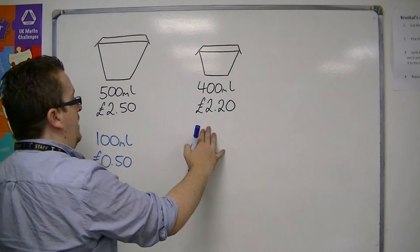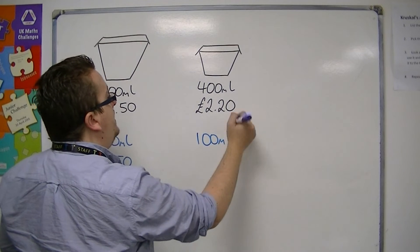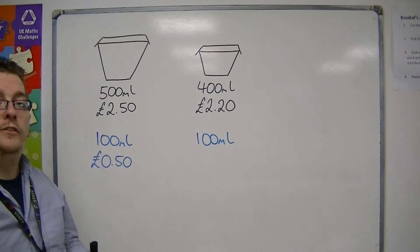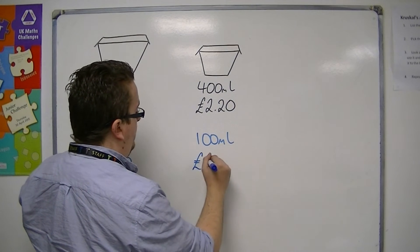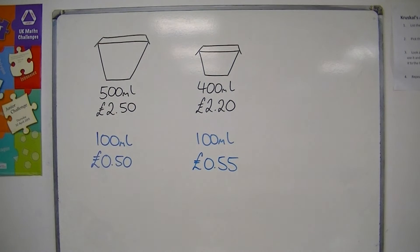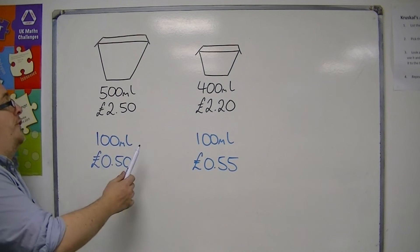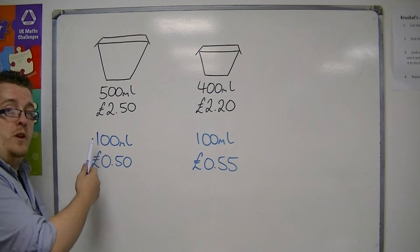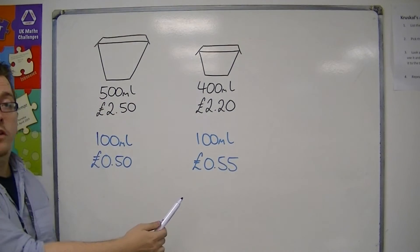For the smaller cup, to get to 100ml I need to divide through by 4. So £2.20 divided by 4 is actually 55p. You can see that 100ml for the larger cup is cheaper — I'm paying 50p for every 100ml — but for the smaller cup I'm paying 55p for every 100ml.